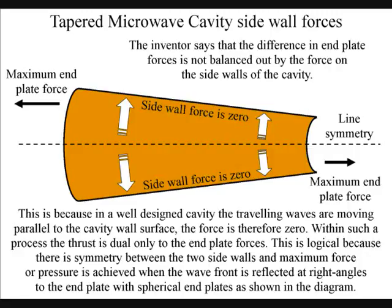This is logical because there is symmetry between the two side walls, and maximum force or pressure is achieved when the wave front is reflected at right angles to the end plate, with spherical end plates as shown in the diagram.